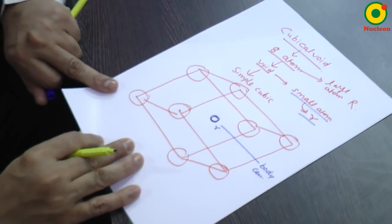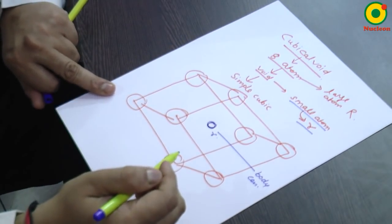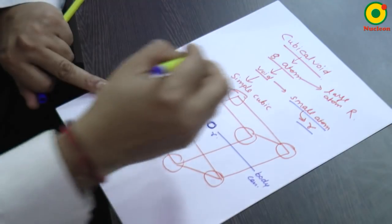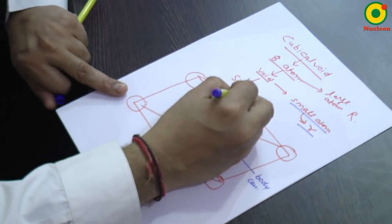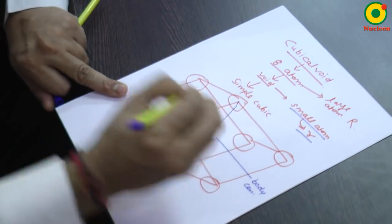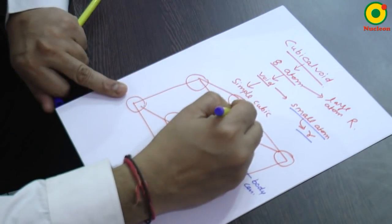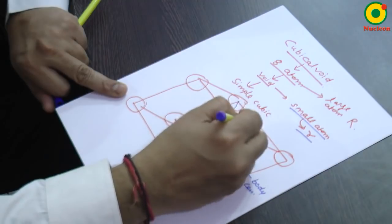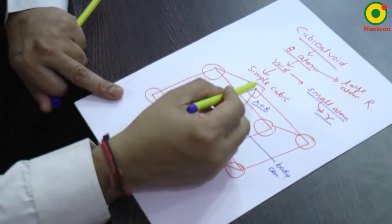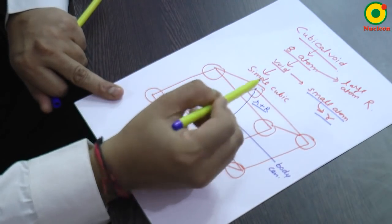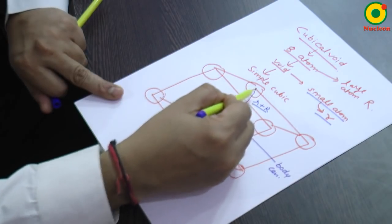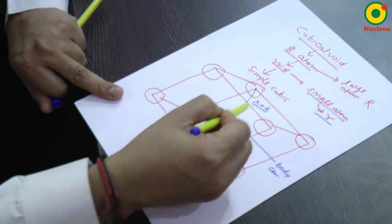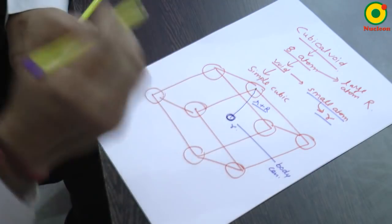Now for the cubical radius, we are going to derive a formula. If I adjoin these center of these two atoms, then this distance will be r plus capital R. From center of large atom to the center of small atom. Since these two atoms are touching each other, this distance will be r plus capital R.